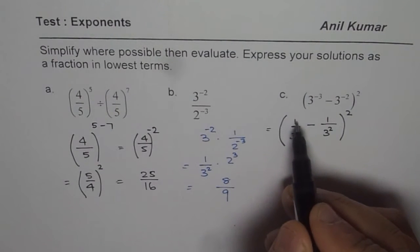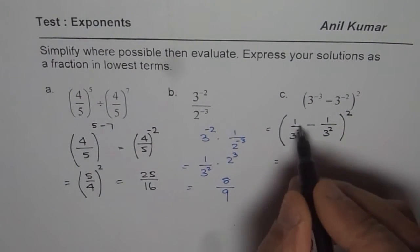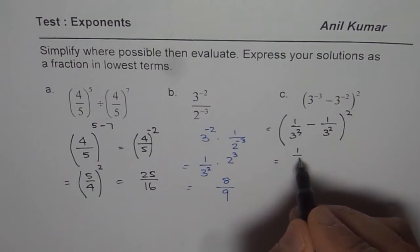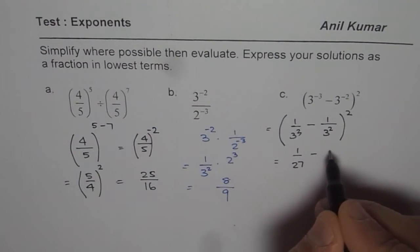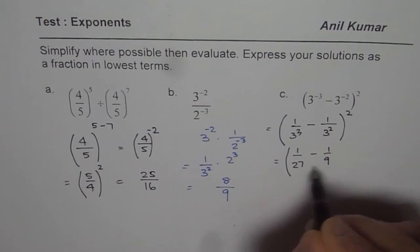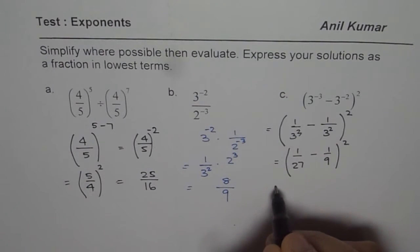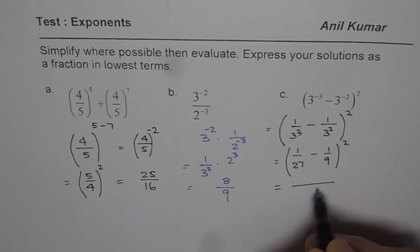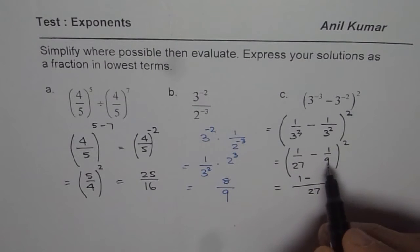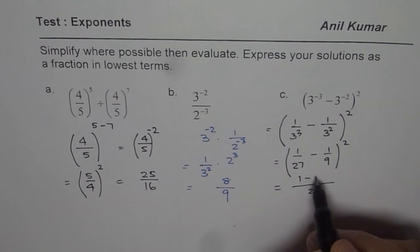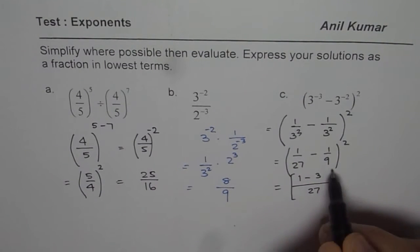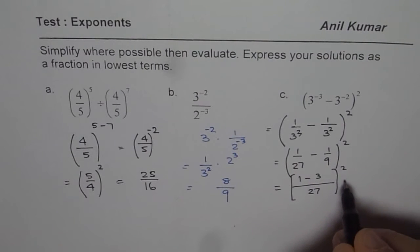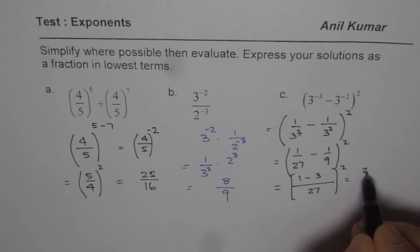3 to the power of minus 3 is 1 over 3 cubed, which is 1 over 27, minus 1 over 9, whole squared. We can take common denominator as 27. We get 1 minus 3, which gives us (2/27) squared.